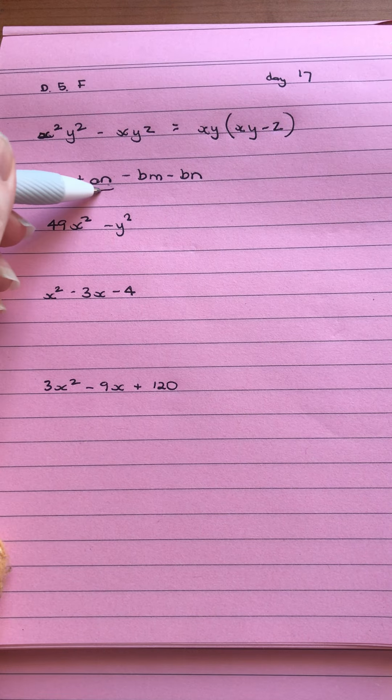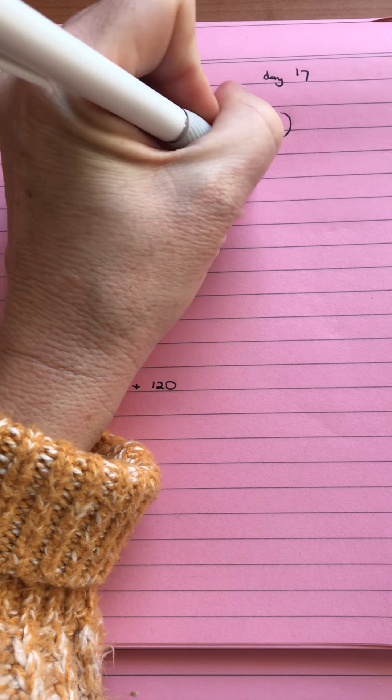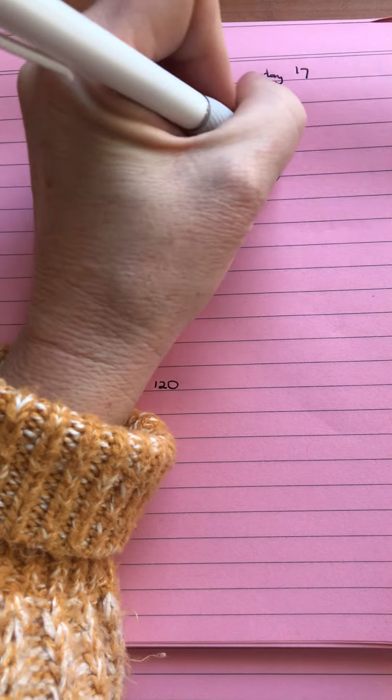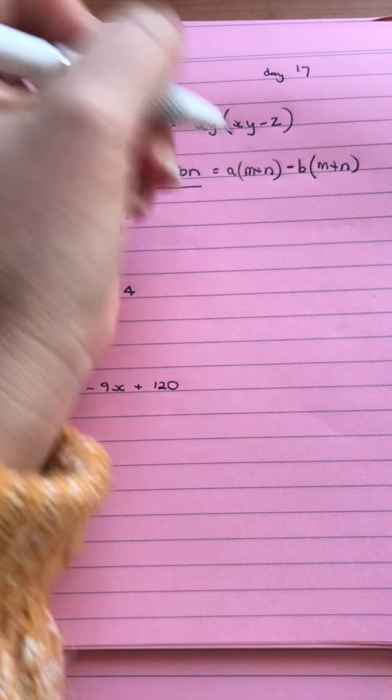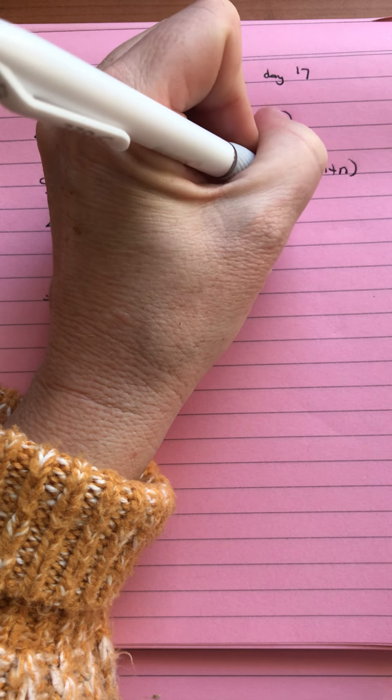For our second one, we're looking at our grouping. So we'll do the first two terms. They have a common factor of a outside of m plus n. And in the second two terms, we can take a minus b outside of m plus n. And then that will give us a, take b, and m plus n in our brackets.